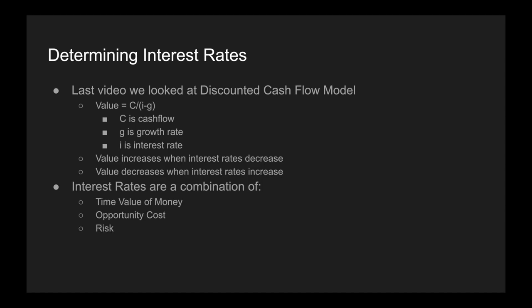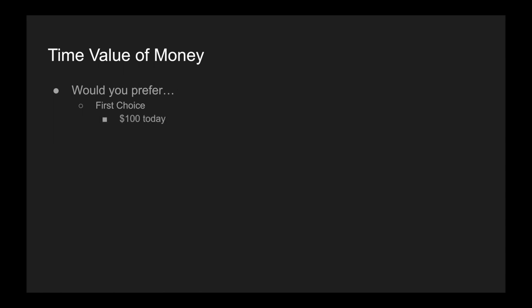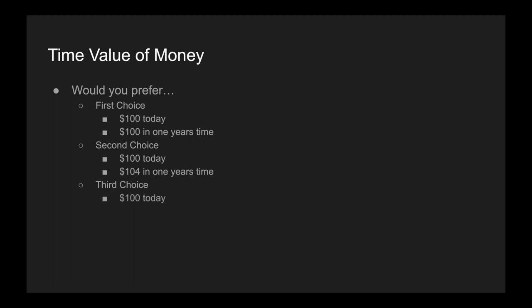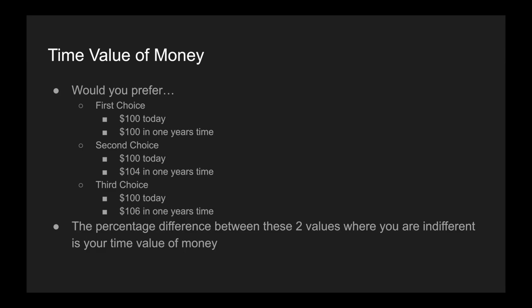Let's focus on the time value of money and go through an illustration. If I ask you which you prefer: $100 today or $100 in one year's time, the majority would choose $100 today. If I gave you $100 today or $104 in one year's time, maybe a few would take the $104. And if I gave you $100 today versus $106 in one year's time, even more would start choosing the future option. The percentage difference between these two values where you are indifferent — where you don't mind if you get it now or later — that is your time value of money.